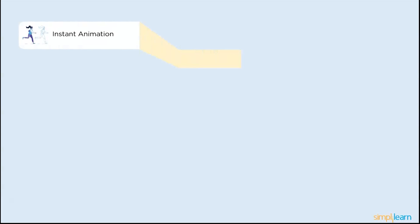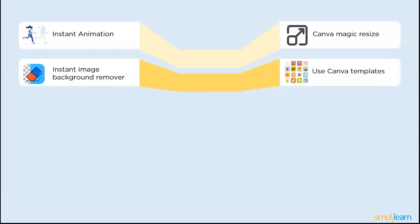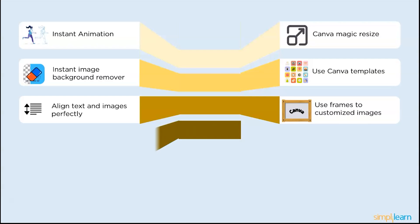Instant animation, Canva magic resize, instant image background removal, use Canva templates, align the text and images perfectly, use frames to customize the images, filter the elements by different colors, use grid to organize the images.